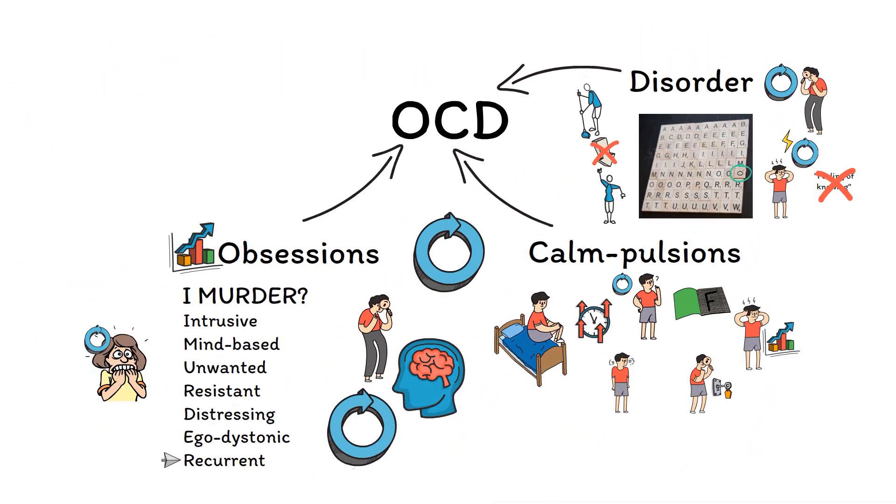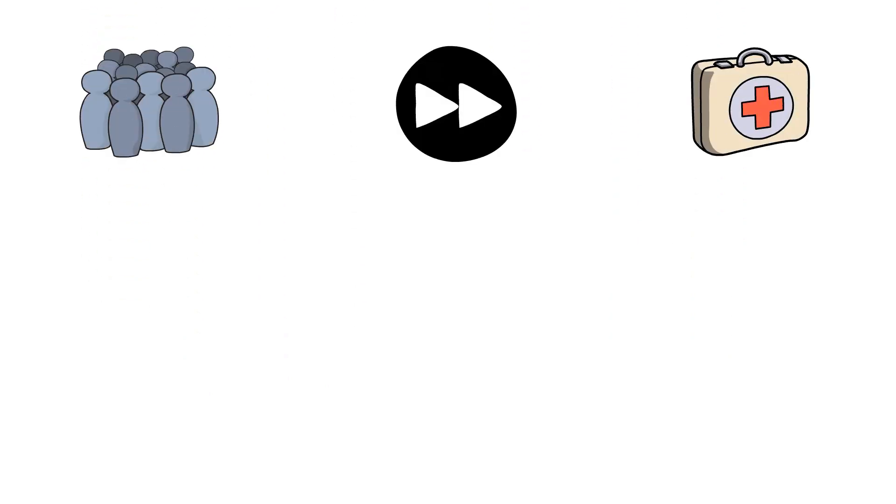Now that we have a clear understanding of all three elements of OCD, let's look at the data behind this disorder, including who gets it, what happens when they get it, and what forms of treatment are most effective.